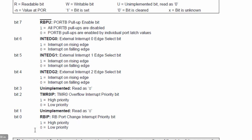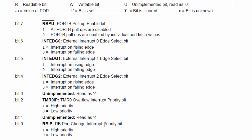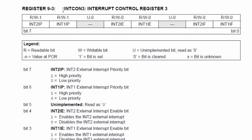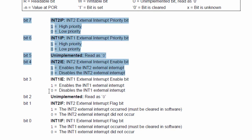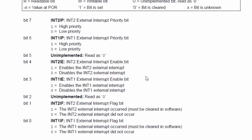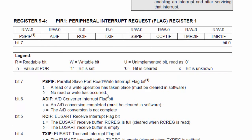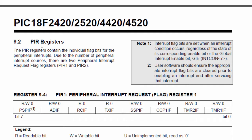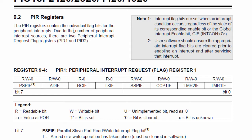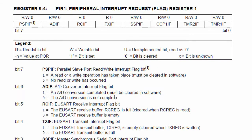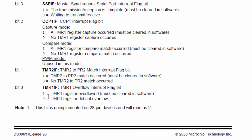In the INTCON2 and INTCON3 interrupt control registers, there's nothing much that concerns us for this tutorial. What is more important for us is the PIR register. The PIR registers contain the individual flag bits for the peripheral interrupt. Due to the number of peripheral interrupt sources, there are two peripheral interrupt request flag registers: PIR1 and PIR2. In PIR1, we have the following bits.